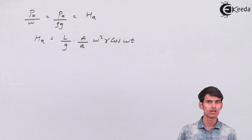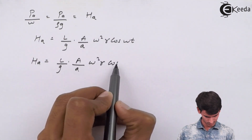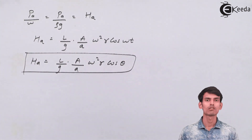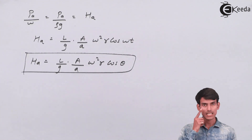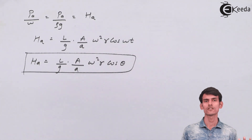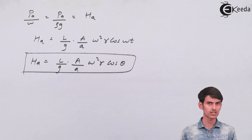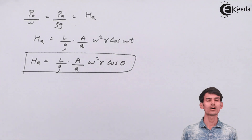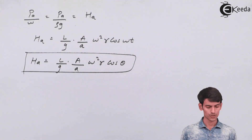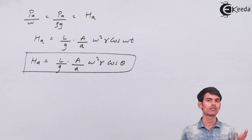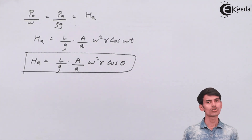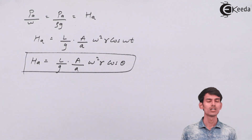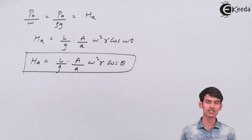Since ωt is nothing but θ, this expression gives us the head due to acceleration. Because the water is accelerating, there is a force; because of force there is pressure; because of pressure there is a pressure head — and this pressure head arises due to acceleration, so we call it the acceleration head H_A. The pump has to overcome not only H_S (the suction head) but also H_A. Since H_A is a function of θ, it has a varying value at different angles.